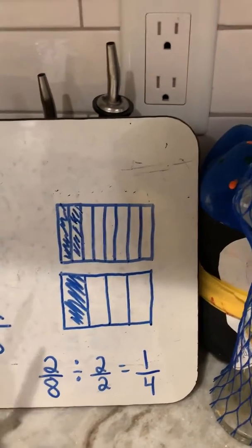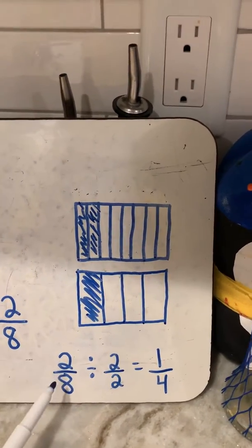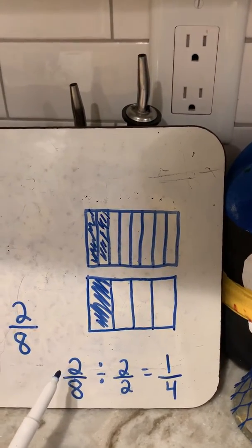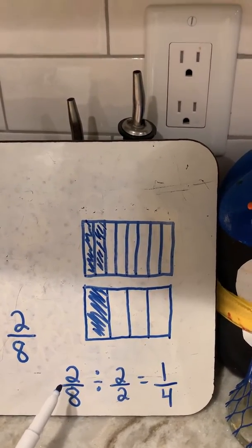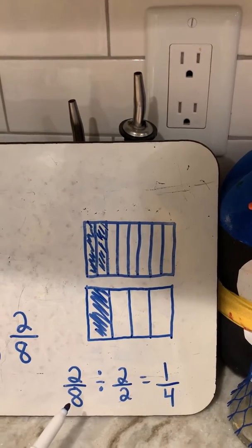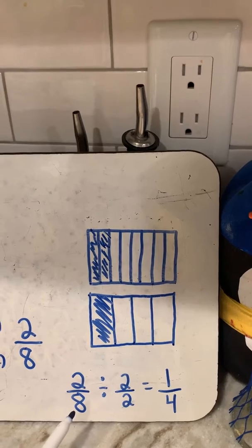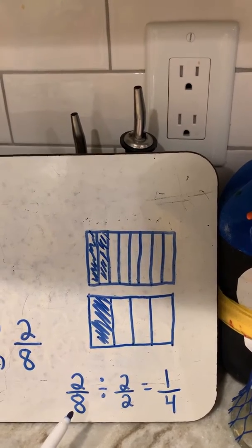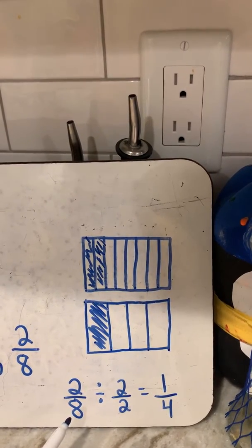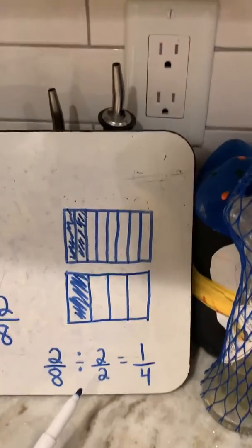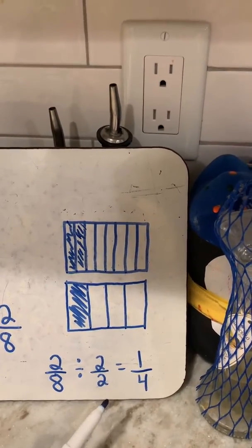Now I know that to simplify a fraction, I have to start with the initial fraction and think to myself, I need to list out those factors, the factors of two and the factors of eight. The factors of two are one and two. The factors of eight are one, two, four, and eight. So I know that the greatest common factor that they both share is two. So I go and I divide by that and I get my simplified fraction.